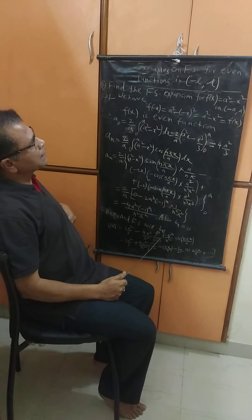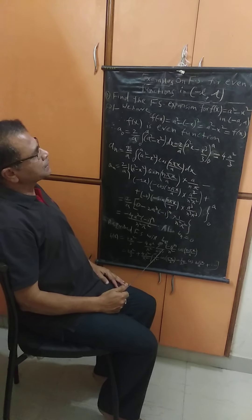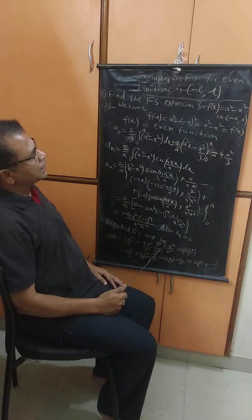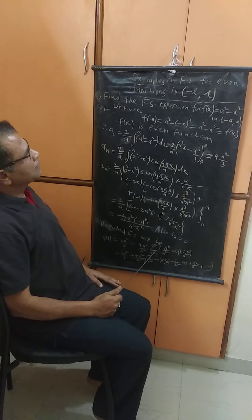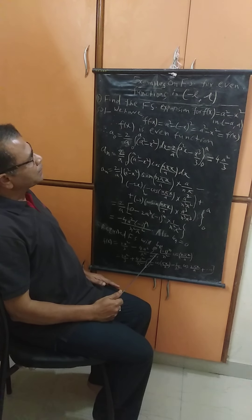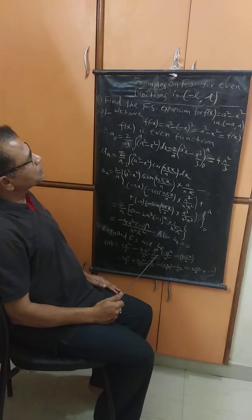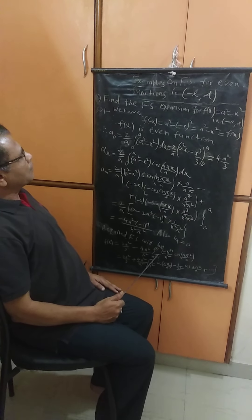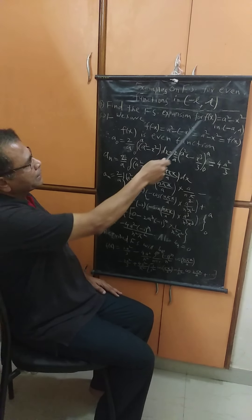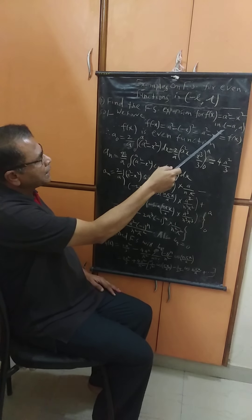In the last video lecture, we have seen some examples on Fourier series expansion for even and odd functions in the interval minus pi to pi. Here, we will again see examples on Fourier series for even functions, but instead of minus pi to pi, in the interval minus L to L. Our first example is: find the Fourier series expansion for f(x) = a² - x² in the interval minus a to a.